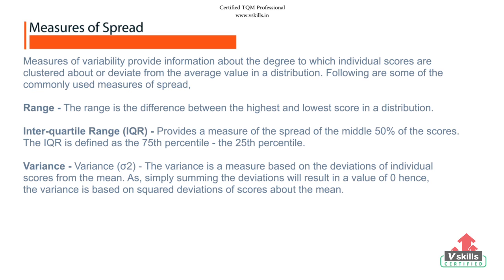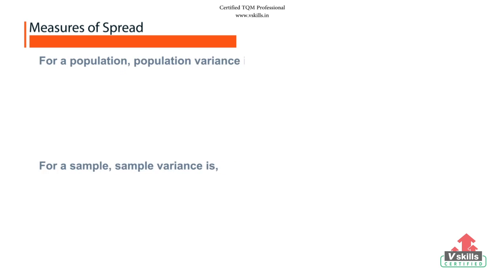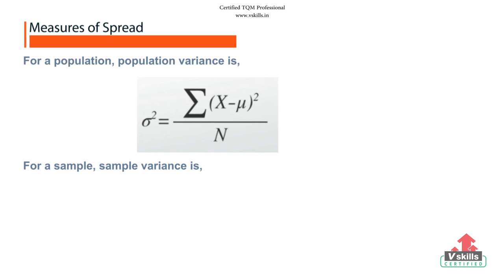Variance or sigma square. The variance is a measure based on the deviation of individual scores from the mean. As simply summing the deviations will result in a value of 0, hence, the variance is based on squared deviations of scores above the mean. For a population, population variance sigma square equals sigma x minus mu square divided by n. For a sample, sample variance equals sigma x minus x mean square divided by n minus 1.